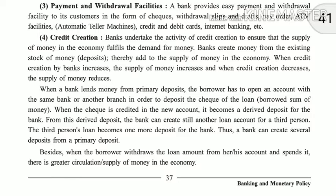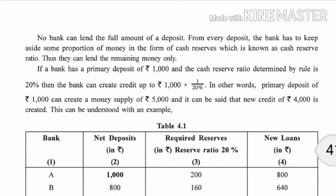The third person's loan becomes one more deposit for the bank. Thus a bank can create several deposits from a primary deposit. For example, if a bank has one crore rupees in deposits and gives one lakh rupee loans to 100 persons, then 100 separate deposit accounts open in the bank. When the borrower withdraws the loan amount and spends it, there is greater circulation of money in the economy, fulfilling demand and keeping the economy running smoothly.